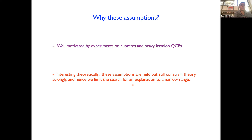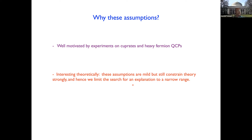If you violate one of the assumptions but maintain the other two, the constraints depend on which one you violate. For instance, you can violate the conductivity scaling and a Fermi liquid will satisfy the other two. That question is better discussed after we understand the constraints coming from the different assumptions.